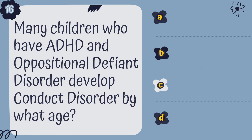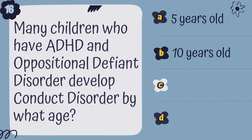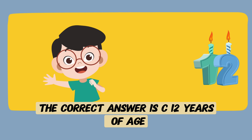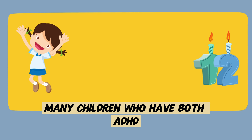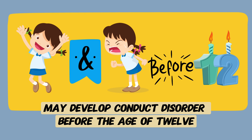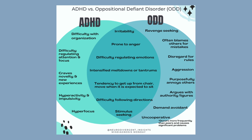Question 16. Many children who have ADHD and oppositional defiant disorder develop conduct disorder by what age? A. 5 years, B. 10 years, C. 12 years of age, or D. 16 years old? The correct answer is C, 12 years of age. Many children who have both ADHD and oppositional defiant disorder may develop conduct disorder before the age of 12, highlighting a critical developmental period during the progression from ODD to conduct disorder.